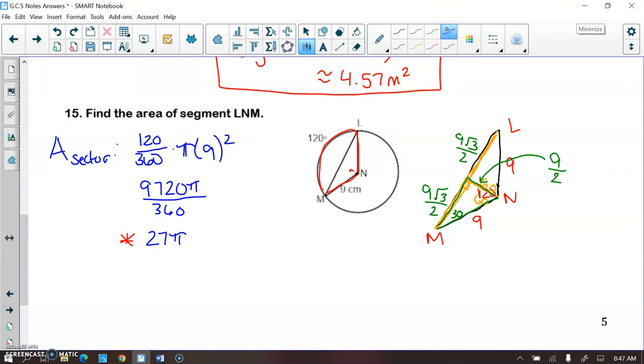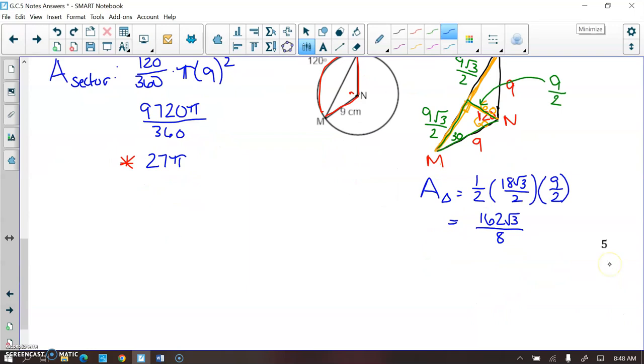So the area of the triangle is one half times my base times my height, so 18 root 3 times 9, or just do the 18 times the 9 part. I get 162 root 3, and in my denominator, 2 times 2 times 2 is 8. And both 162 and 8 are divisible by 2.